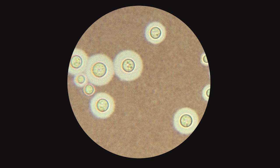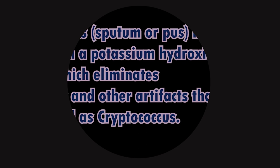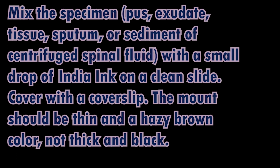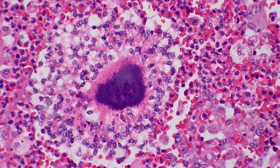India ink preparation is also a wet mount preparation, but it is a negative stain. The India ink method is useful for demonstrating the presence of a capsule and has been used for demonstrating Cryptococcus neoformans in clinical samples, particularly in CSF. The capsule displaces the colloidal carbon particles in the ink, and the capsule appears as a clear halo around the yeast cells. It is a negative stain.